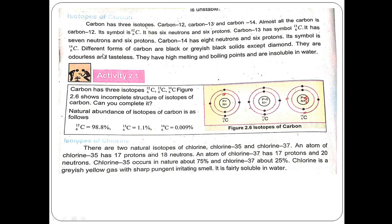Properties of carbon: it is a black or greyish-black solid except for diamond. It is odorless, tasteless, has a high melting point and boiling point, and is insoluble in water. Natural abundance: carbon-12 is 98.8%, carbon-13 is 1.1%, and carbon-14 is 0.009%.